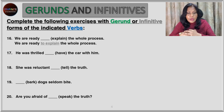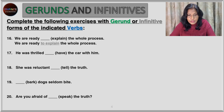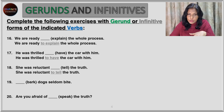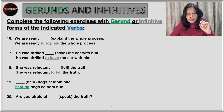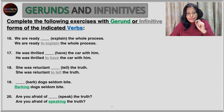Here are the answers: We are ready to explain the whole process — using the infinitive form. After 'ready', we use the infinitive form of the verb. He was thrilled to have the car with him — again it's '-ed', and after '-ed' we always use the infinitive, so 'to have', not 'having'. She was reluctant to tell the truth — after 'reluctant', we use the infinitive form. Barking dogs seldom bite — this is the subject, describing the dogs, so it's the gerund form, 'barking', not 'to bark'. Are you afraid of speaking the truth? — after the preposition 'of', we always use the gerund, since gerunds are objects of prepositions.